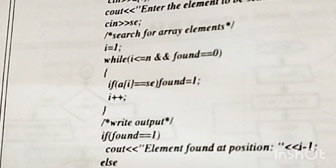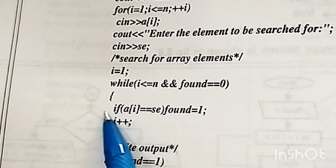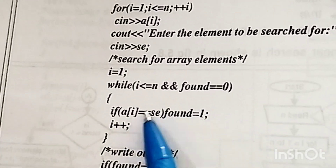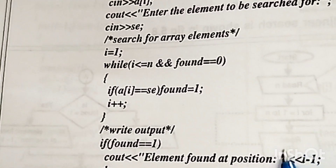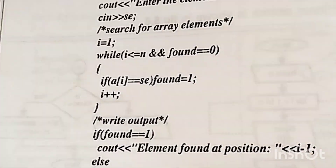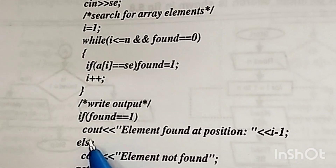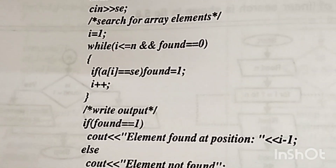Then we start the loop. Inside the loop, we check whether the element the user told us to search is equal to the current element or not. If it is equal, then we set found to 1. Once found is 1, we show that the element is found and print its position. If the user entered an element not present in our list, we handle another else case where we show the user that the element was not found.